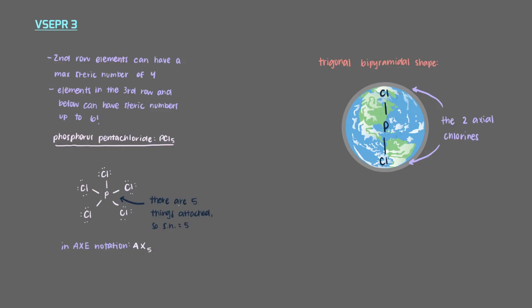There are also three chlorines around the equator of our planetary molecule. They are found sticking out from the central atom like this. These three chlorines are the equatorial chlorines. Let's remove the globe image. This is our trigonal bipyramidal PCl5 molecule.